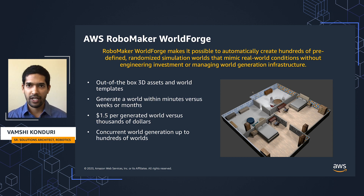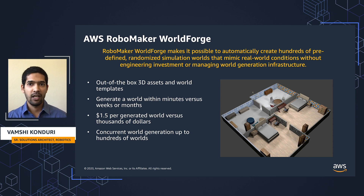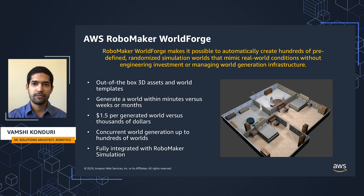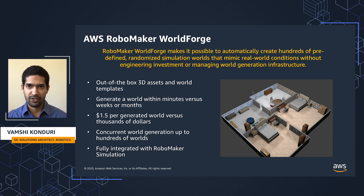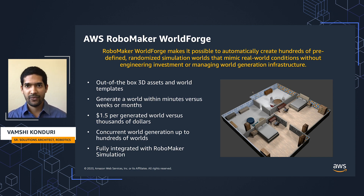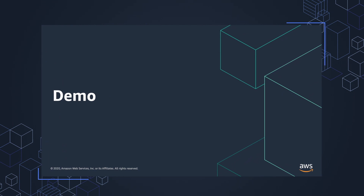On top of this, you can create hundreds of worlds within minutes and do them concurrently with our managed service. AWS RoboMaker will take care of creating these worlds concurrently and in parallel so that you don't have to worry about managing that. And all of this is fully integrated with RoboMaker simulations. RoboMaker provides first-class support with the worlds generated from the WorldForge functionality, and you can import your WorldForge world into your application with a single click or a simple change in your API. Now, let's hear from Sam Gundry who will walk you through how to generate these WorldForge worlds.